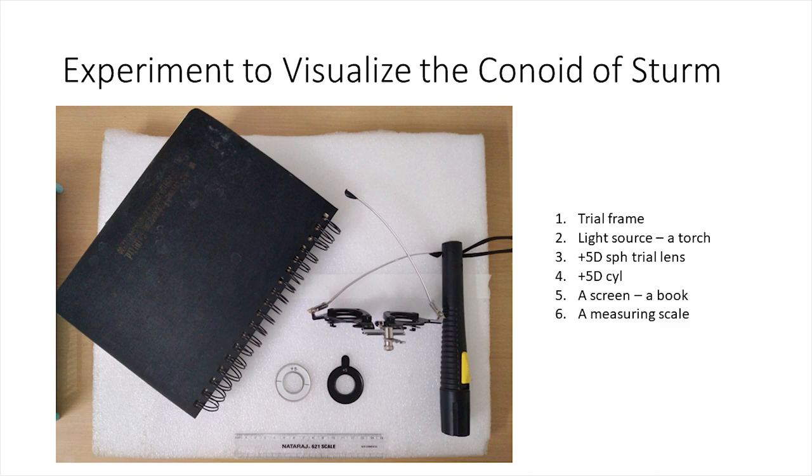These are the materials required. We need a trial frame to place the lenses, a light source, we used a torch, plus 5 diopter sphere, a plus 5 diopter cylinder, a screen, in this setup we used a book with a black cover as a screen, and a measuring scale to measure and mark the foci and the circle of least confusion.